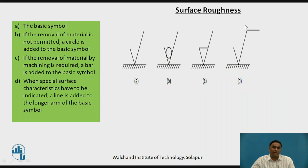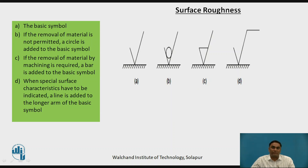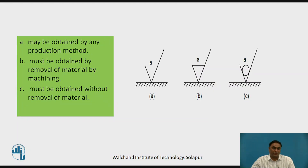Suppose you want to specify some special machining process or sampling length — in that case, these symbols can be used. These are the four symbols which can be used to represent surface roughness. We will move further to discuss the next set of surfaces.